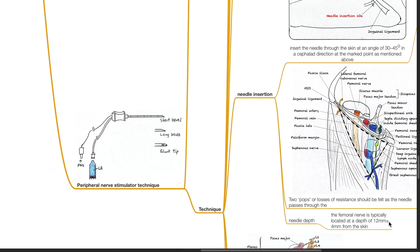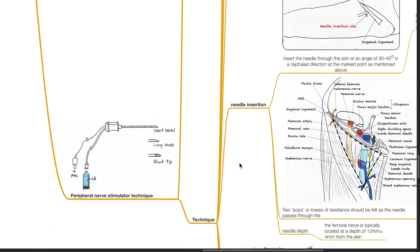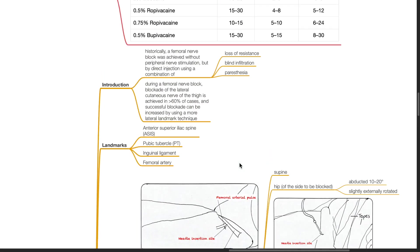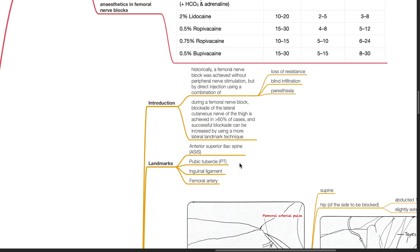Peripheral nerve stimulator technique — Introduction. Historically, a femoral nerve block was achieved without peripheral nerve stimulation but by direct injection using a combination of loss of resistance, blind infiltration and paresthesia. During a femoral nerve block, blockade of the lateral cutaneous nerve of the thigh is achieved in more than 60% of cases, and successful blockade can be increased by using a more lateral landmark technique.